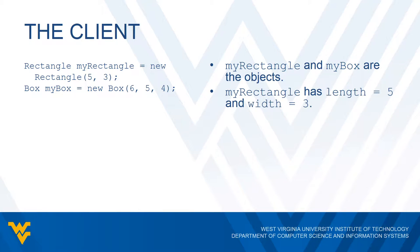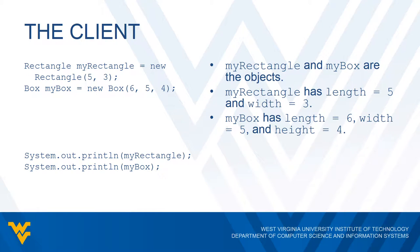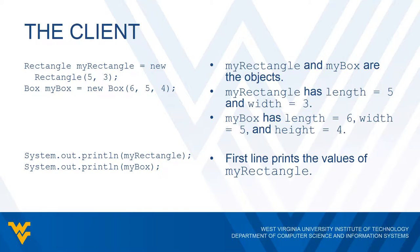My rectangle has two instance variables: the length is going to be set to five and the width is going to be set to three. My box has three instance variables: the length is going to be set to six, the width to five, and the height to four. So now let's suppose we have the following code: system.out.println my rectangle and system.out.println my box. Assuming the toString method is defined for both classes, the first line prints five and three, and the second line prints six, five, and four.